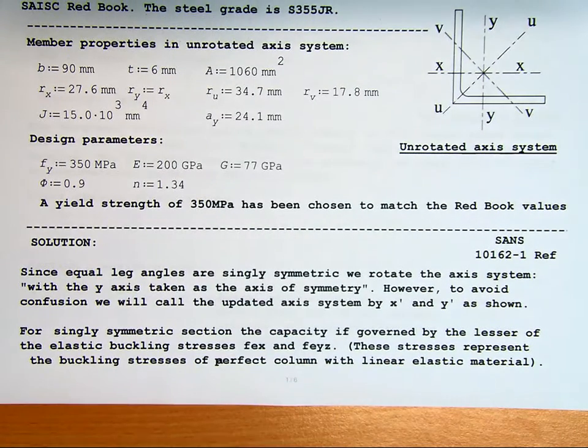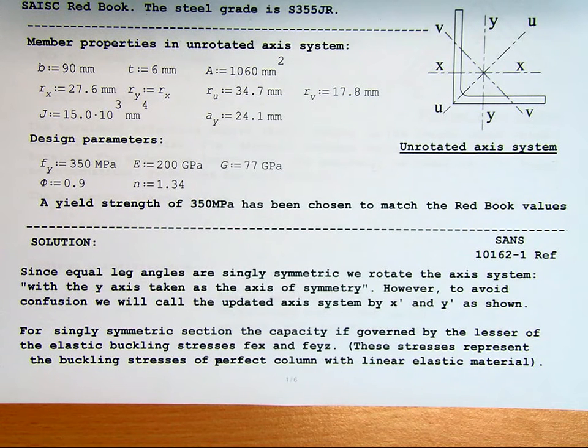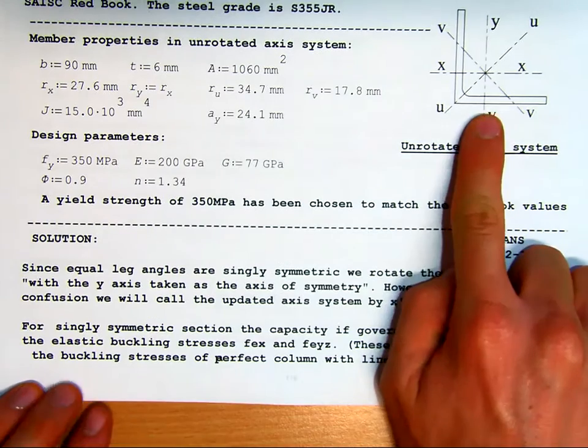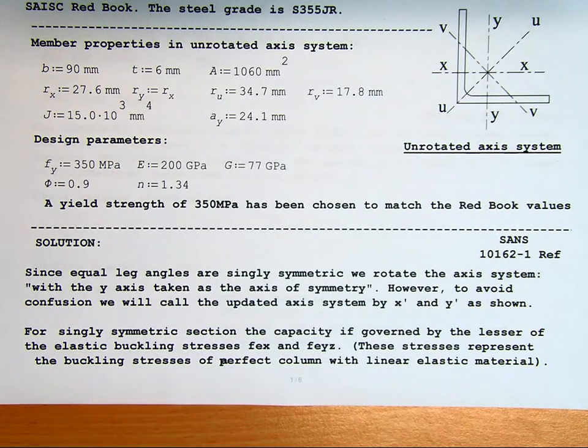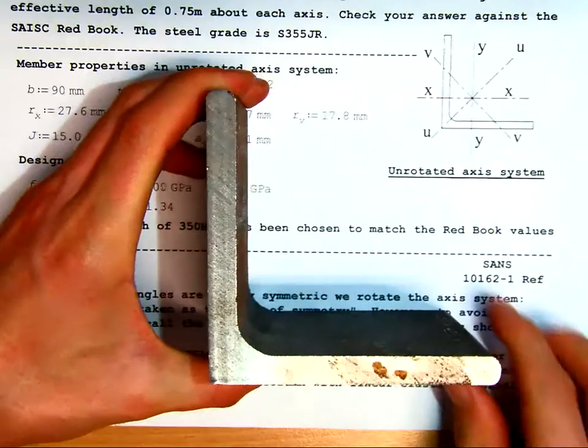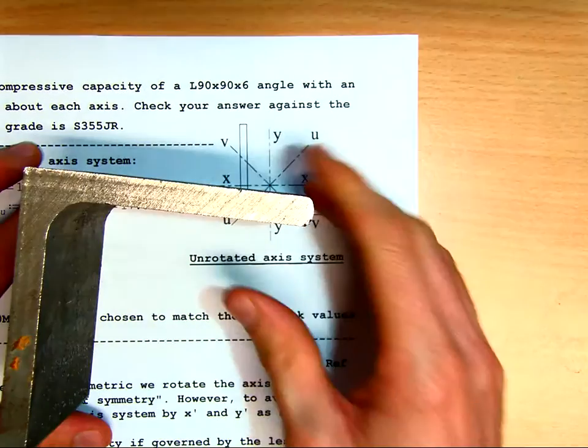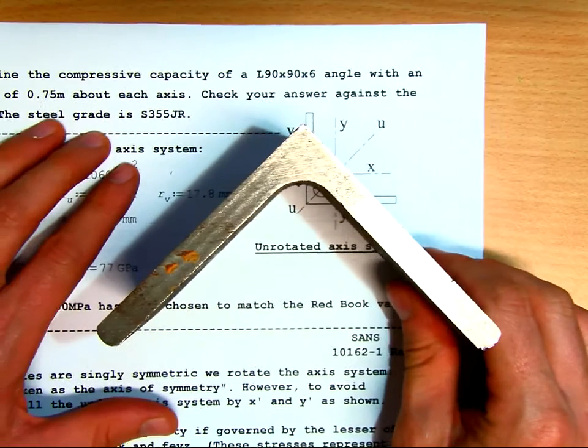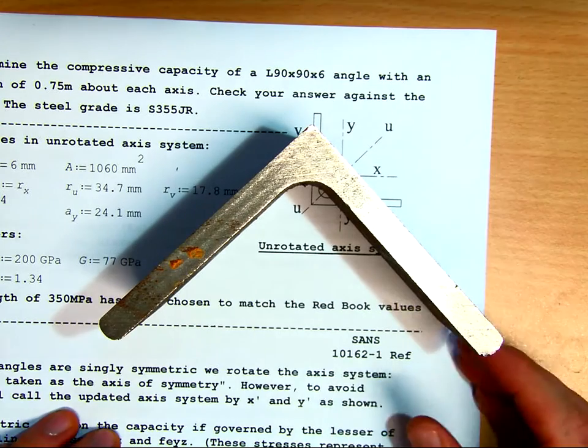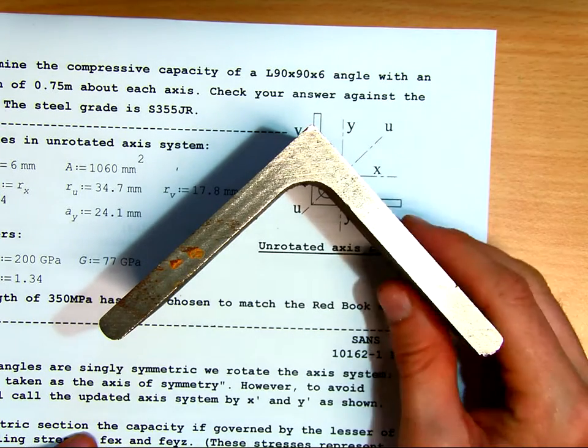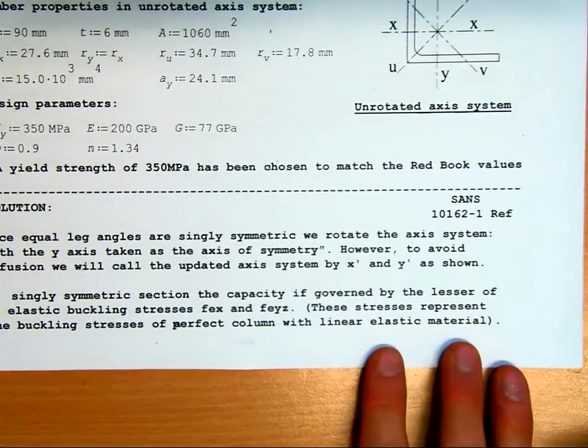Since equal leg angles are singly symmetric, we rotate the axis system, and this is straight out of the design code, with the y-axis taken as the axis of symmetry. However, to avoid confusion, we're going to call the updated axis system by x' and y', simply to make sure we know whether we're in the original axis system, as shown here, or we're in an updated axis system. So what we're going to do is take our section. Its x and y-axes are currently as shown, and we're going to rotate this so that the y-axis is the axis of symmetry.